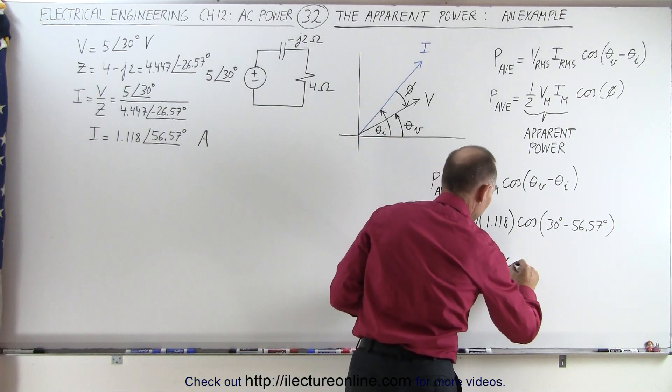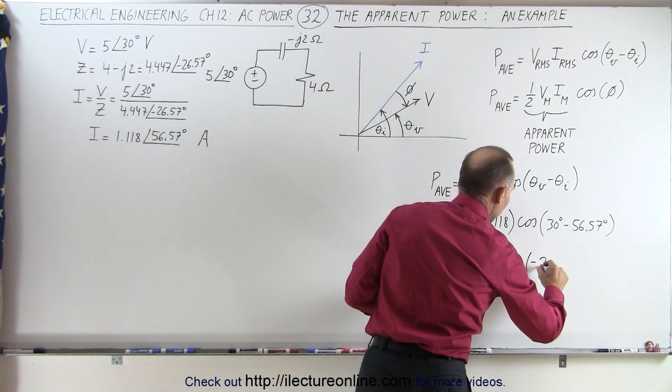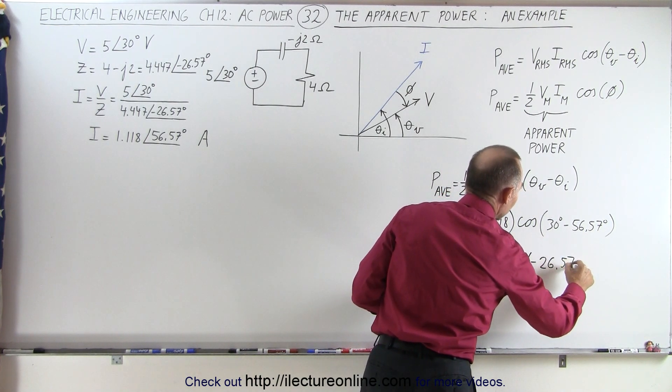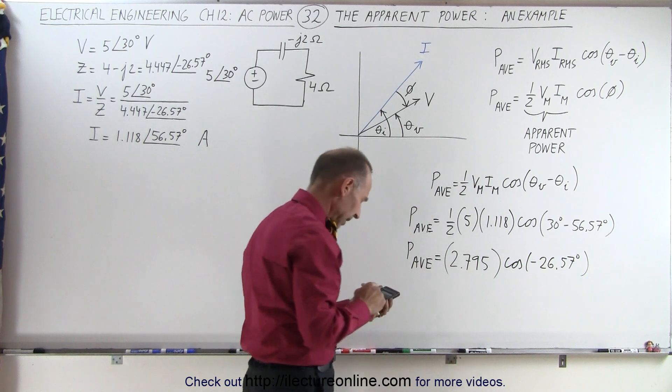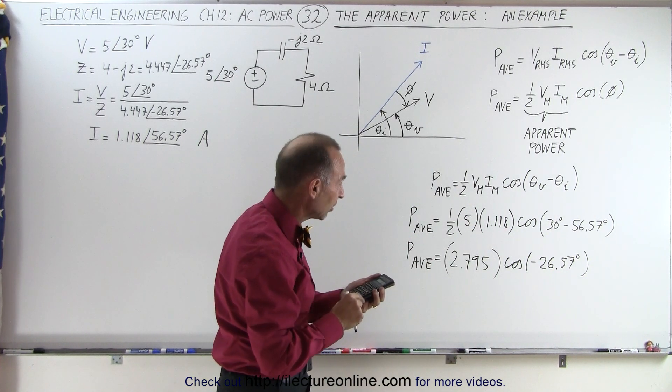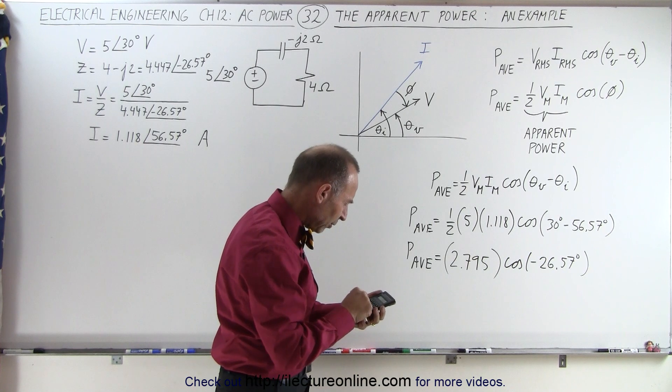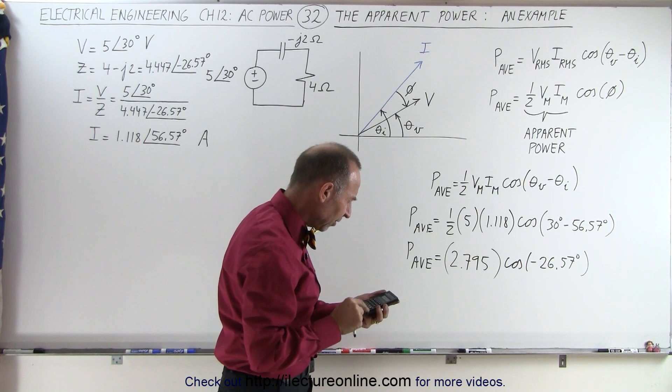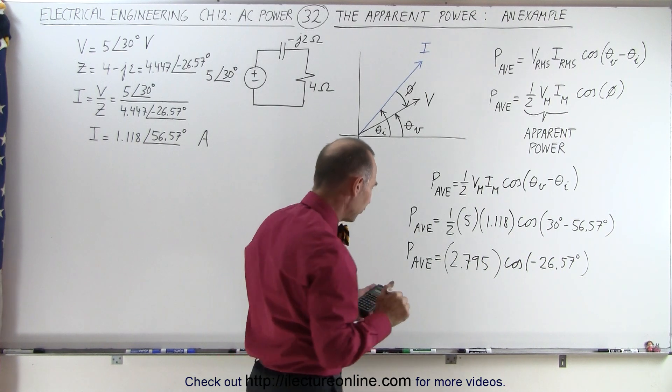Times the cosine of minus 26.57 degrees. So if we take the cosine of that, let's take the cosine of that, that gives us 0.8944.